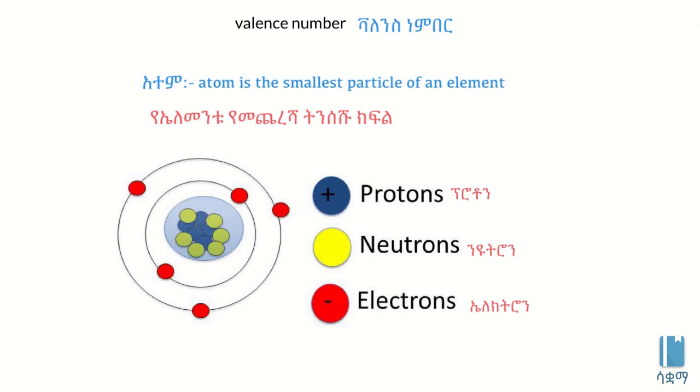The atom contains protons, neutrons, and electrons. Protons have a positive charge, neutrons have no charge, and electrons have a negative charge.